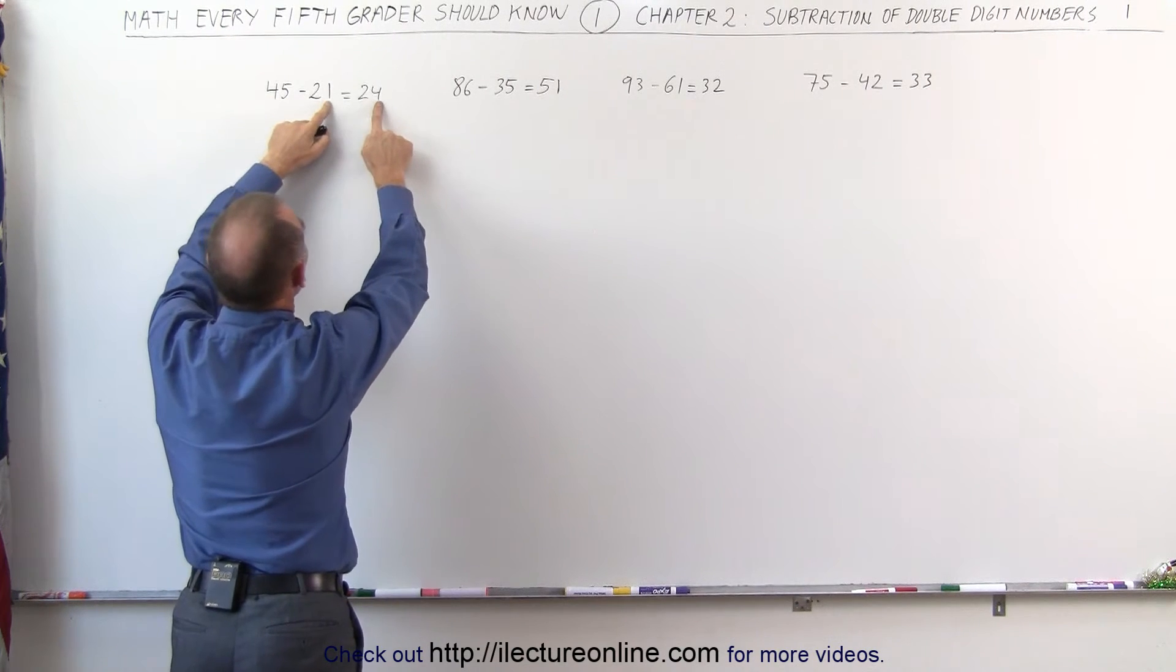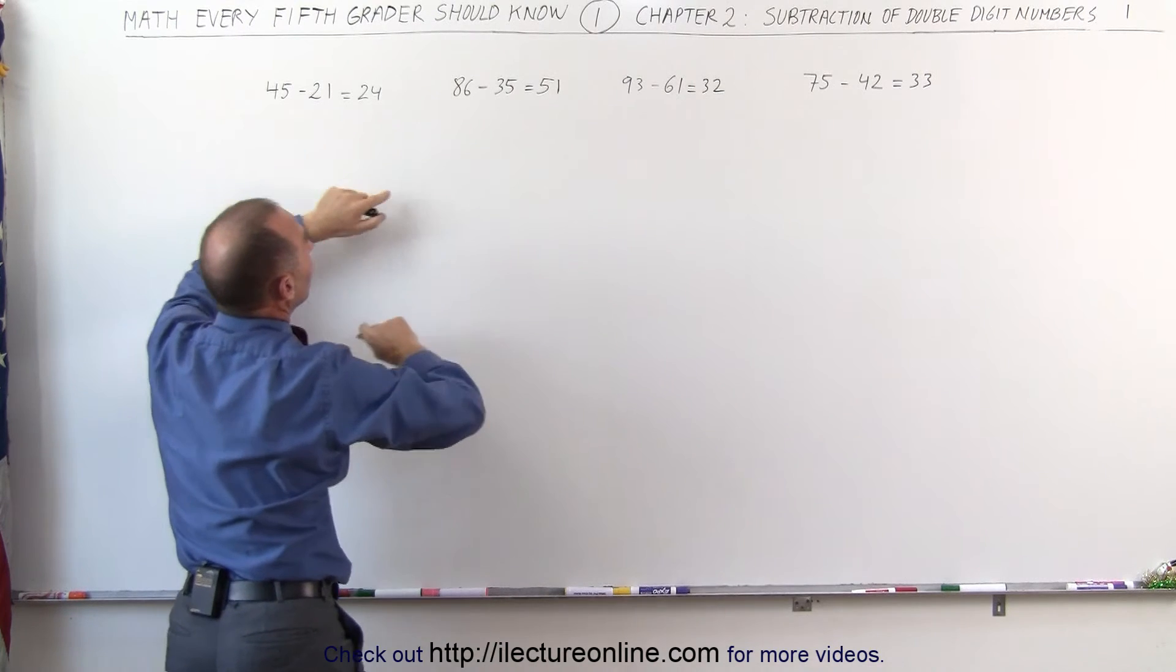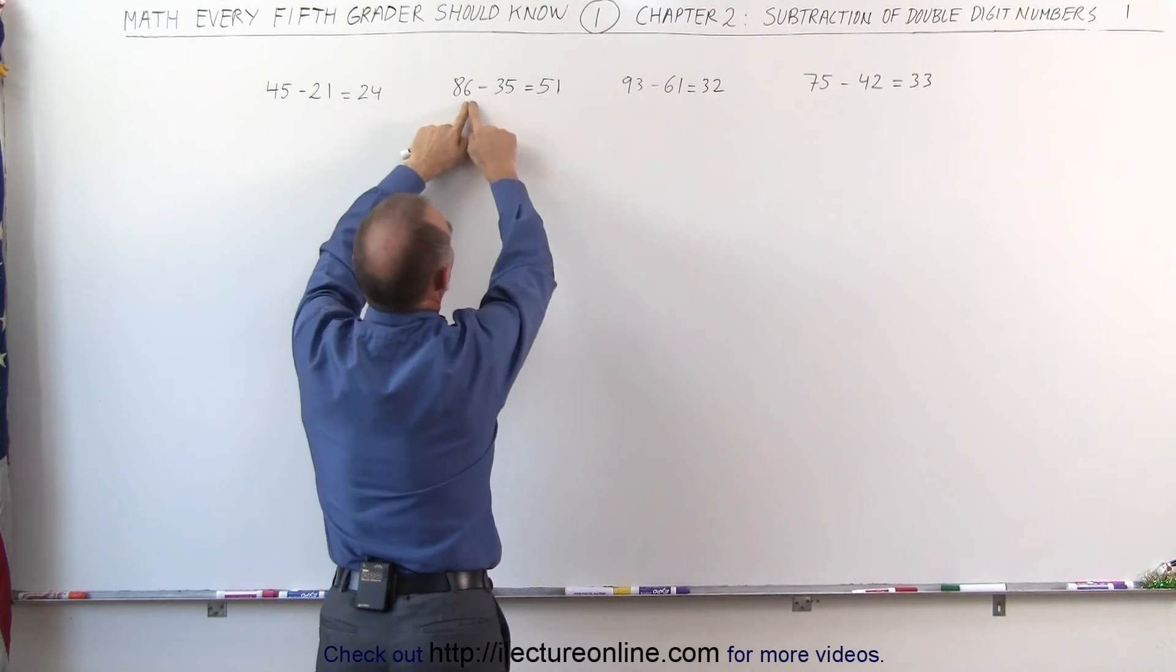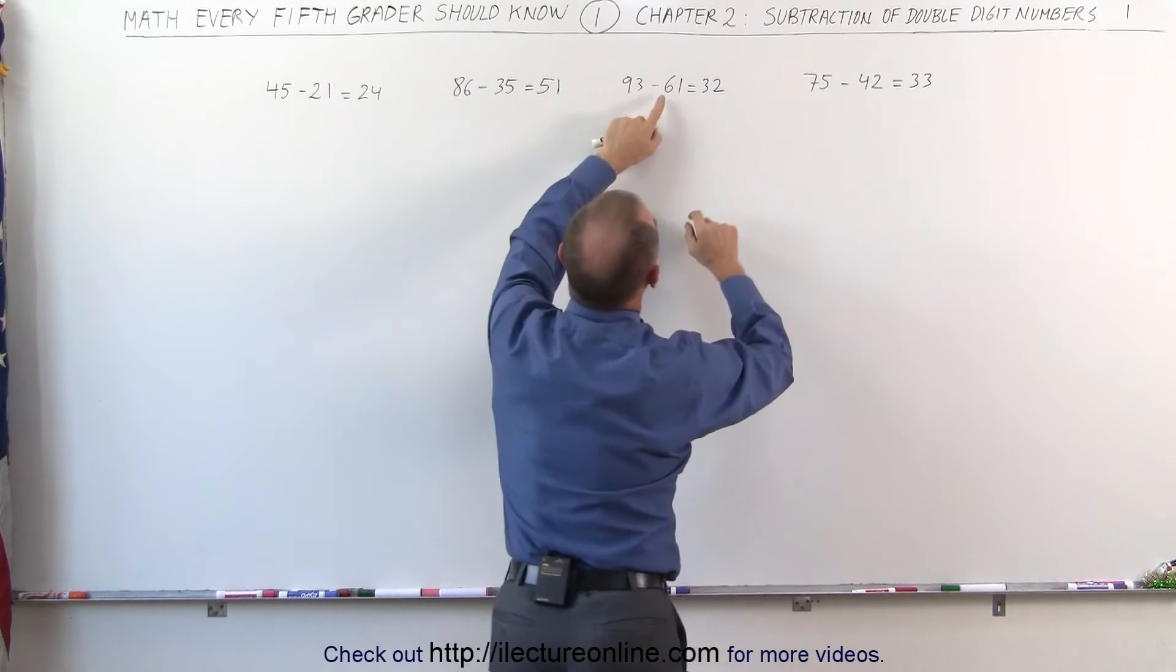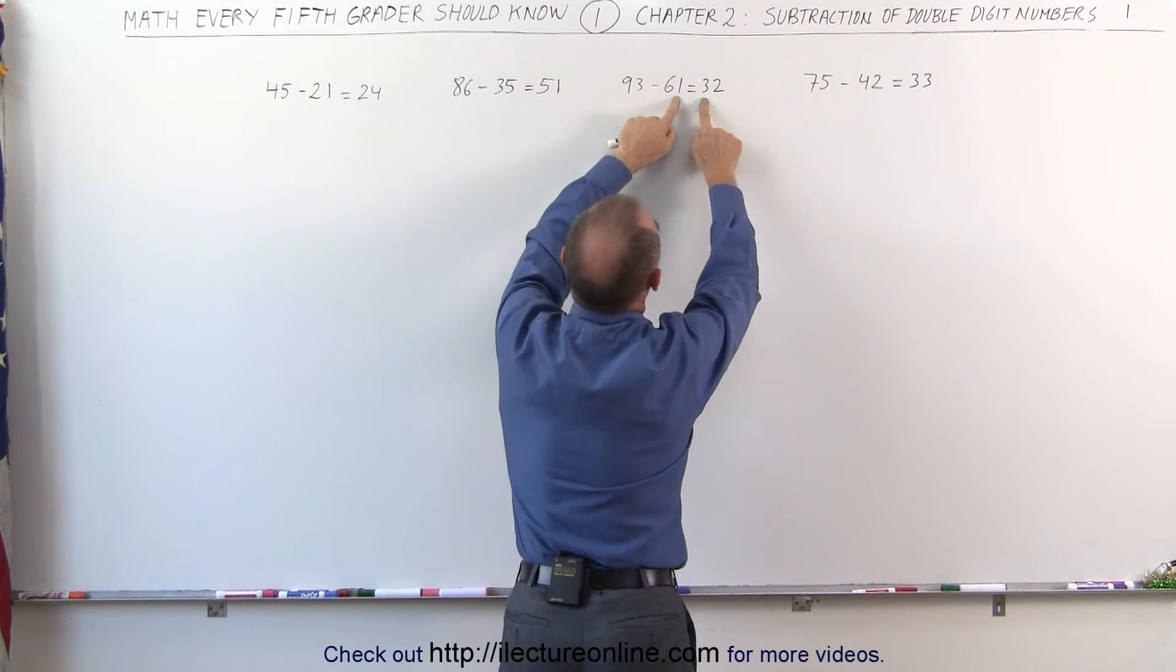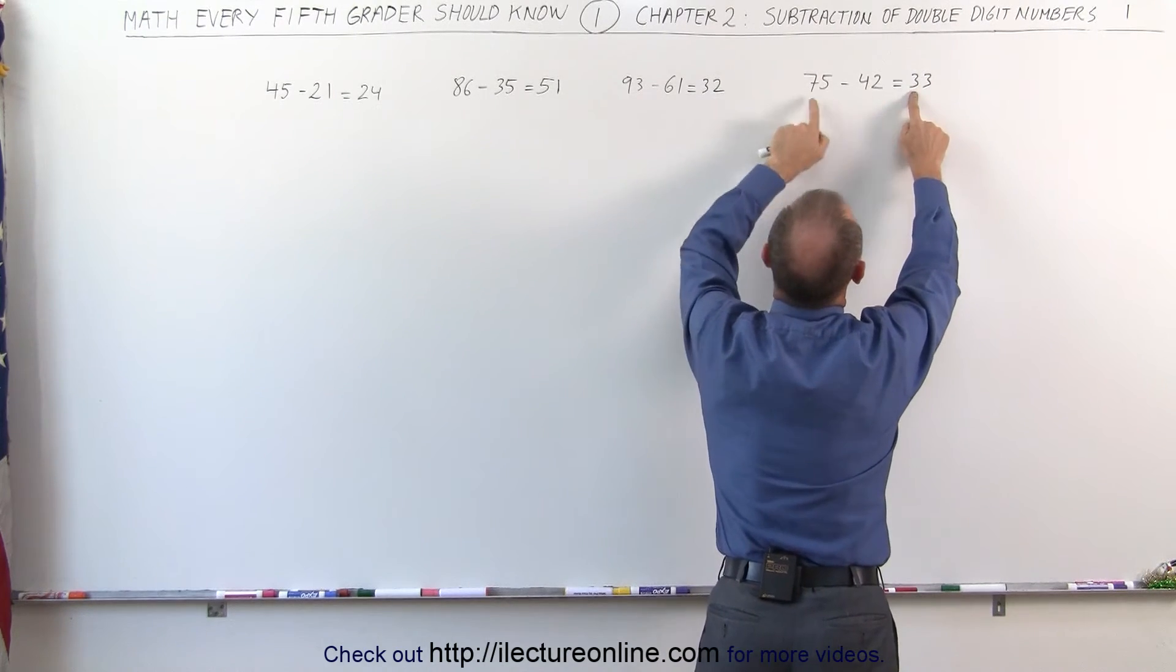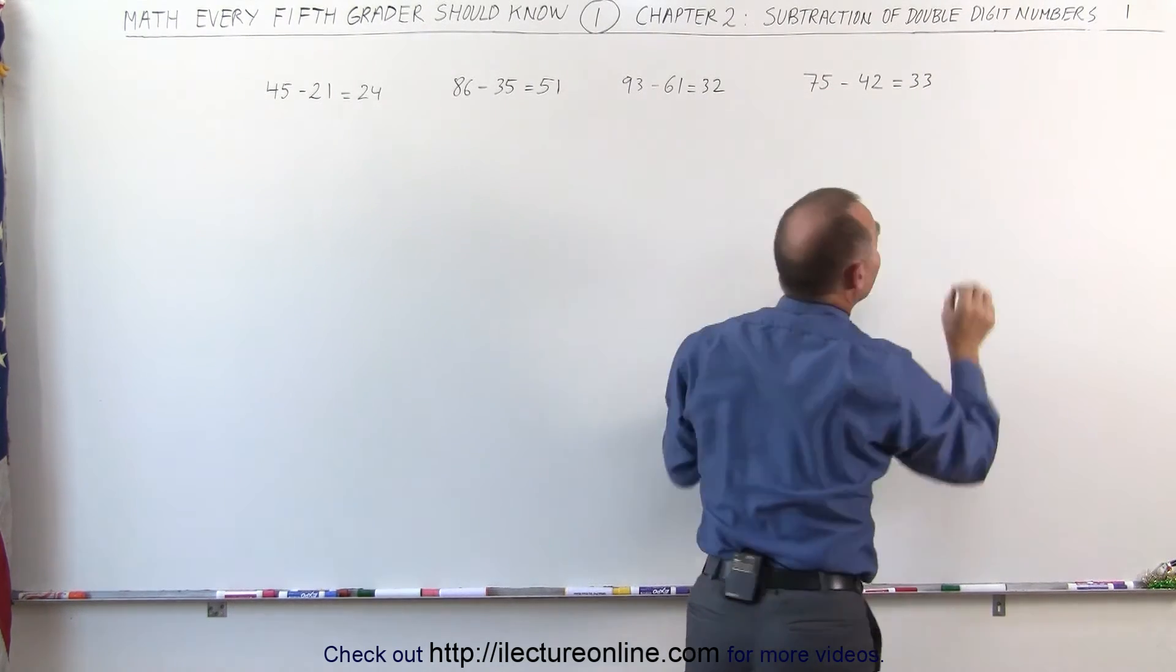2 plus 2 gives us 4. 1 plus 4 gives us 5. We did that correctly. 3 plus 5 is 8. 5 plus 1 is 6. We did that correctly. 6 plus 3 is 9. 1 plus 2 is 3. We did that correctly. And 4 plus 3 is 7. 2 plus 3 is 5. We did that correctly.